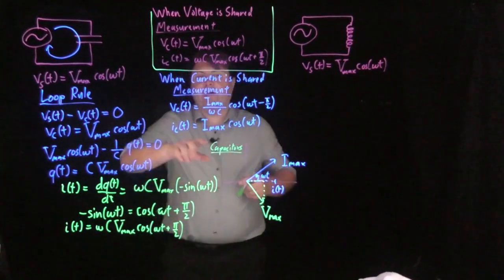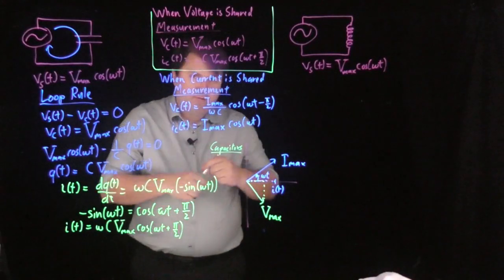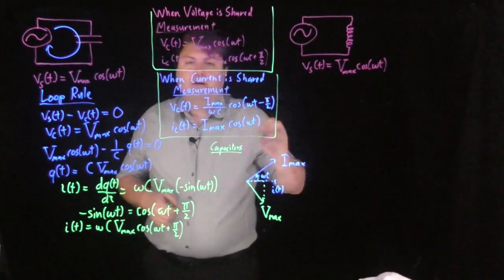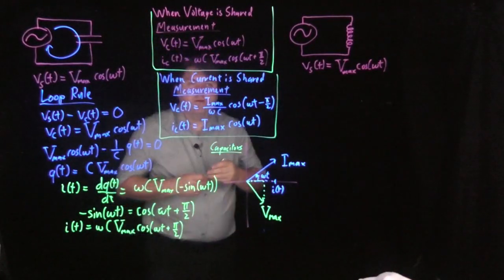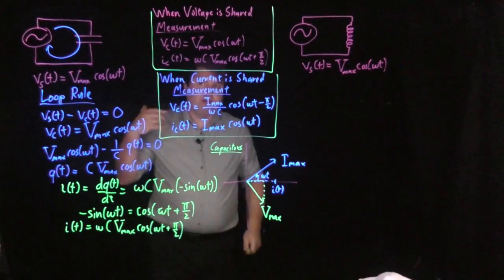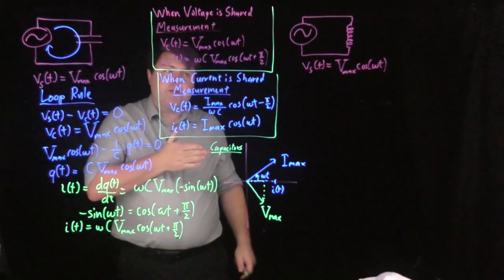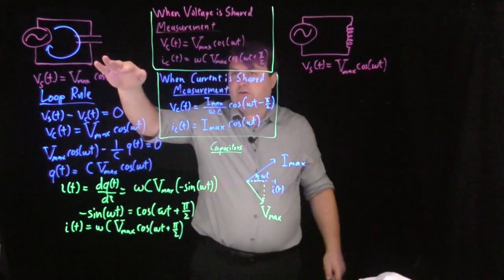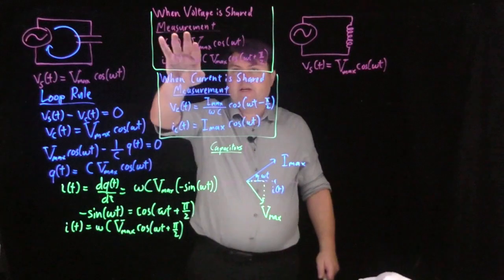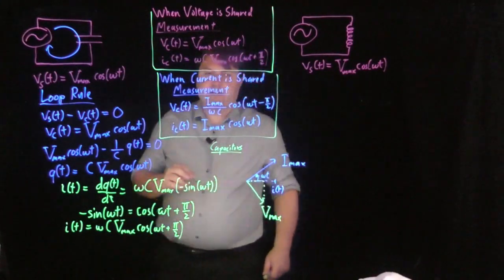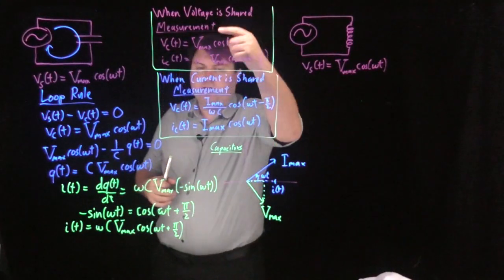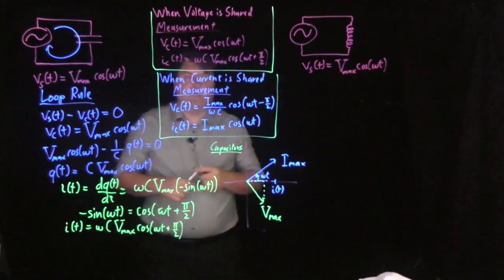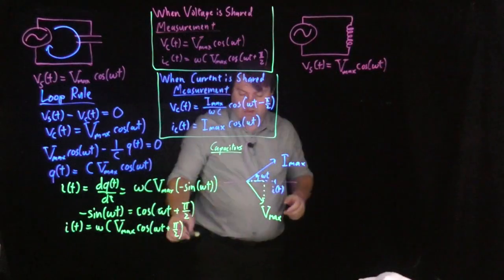Very often, current being the shared measurement is slightly more useful just because we're going to have a lot more elements in series than in parallel, but we usually learn it with voltage as the shared measurement. Whichever one we're using is the one we want to apply.